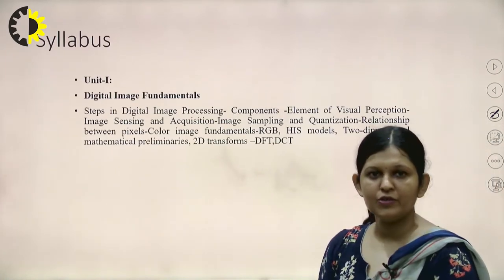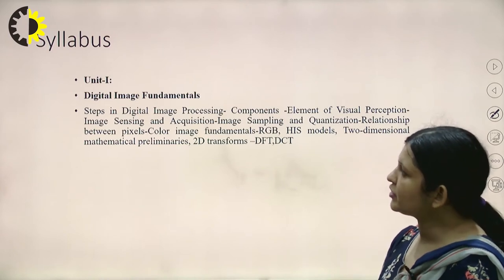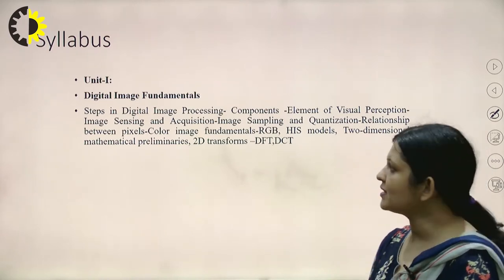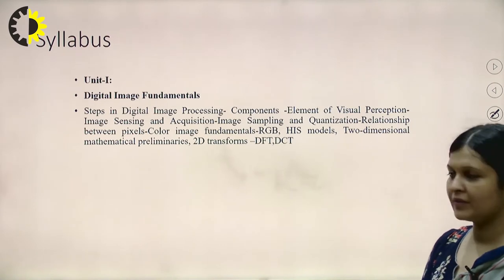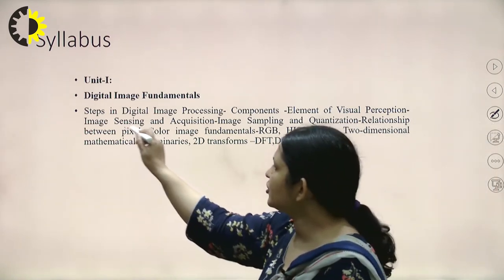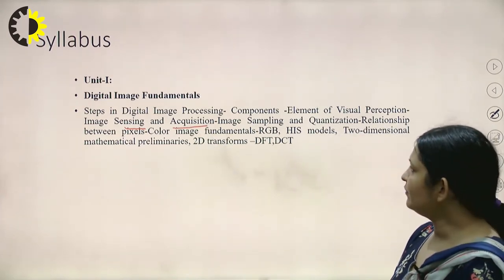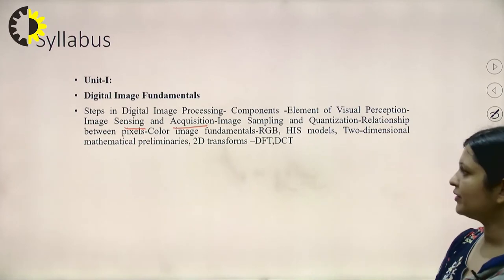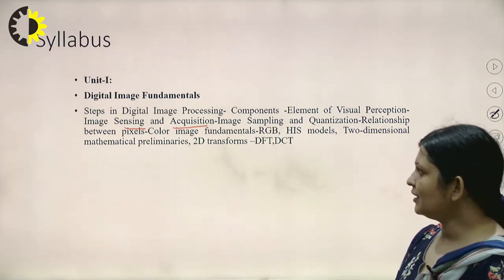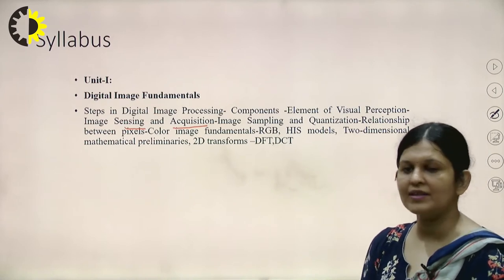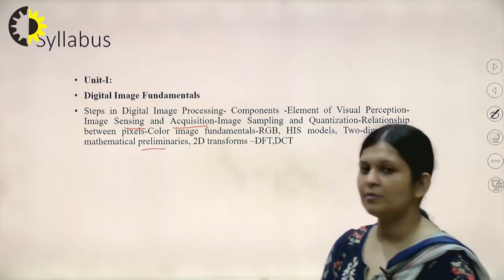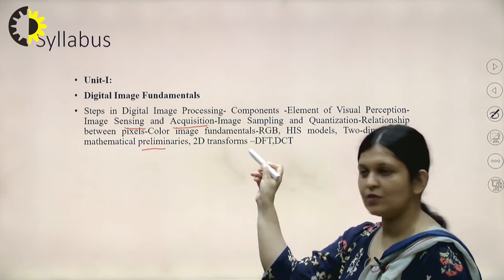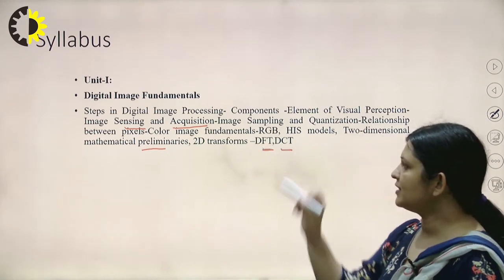First, let's see the topics of unit 1. We will be doing digital image fundamentals — steps in digital processing, components and elements of visual perception, image sensing and acquisition, image sampling and quantization, relationship between pixels, color image fundamentals covering RGB and HIS models, 2D mathematical preliminaries, and 2D transforms including DFT and DCT.